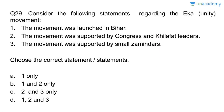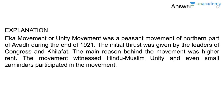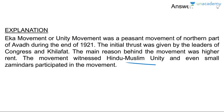Question twenty-nine: the Eka or Unity Movement. The movement was launched in Bihar — wrong. It was supported by Congress and Khilafat leaders — correct. It was supported by small zamindars — correct. Answer is C, two and three. The Eka movement was a peasant movement of northern Awadh during the end of 1921. The main reason was higher rent, and the movement witnessed Hindu-Muslim unity; even small zamindars participated.